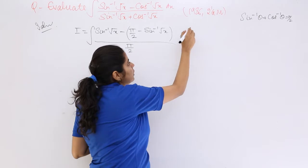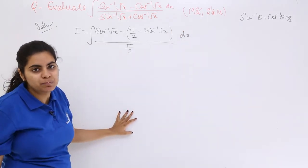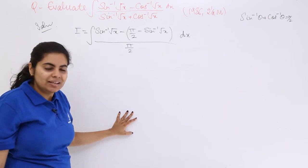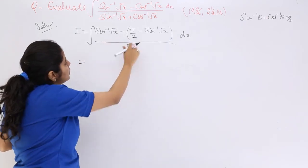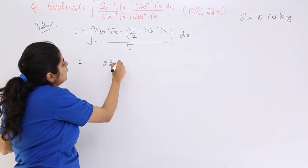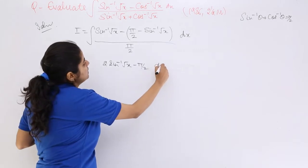And dx would never vanish. Before integration you cannot vanish the dx that you are going to integrate. Next, we see that sin inverse root x becomes 2 sin inverse root x minus π/2, and here is dx.